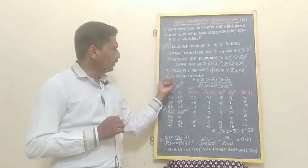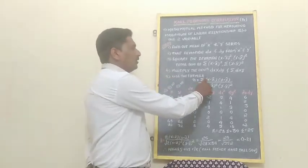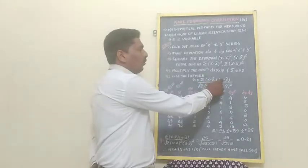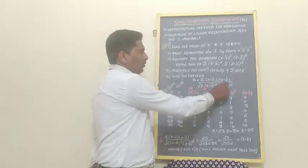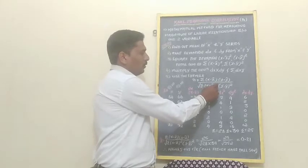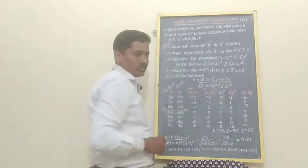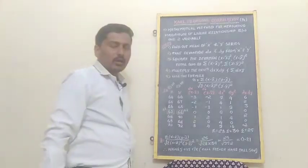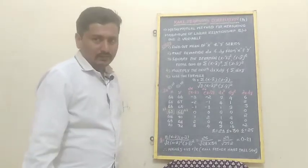Fifth step: use the formula. r equals summation of (x minus x-bar)(y minus y-bar) divided by the square root of summation of (x minus x-bar) whole square multiplied by summation of (y minus y-bar) whole square. By applying this formula we calculate the result.